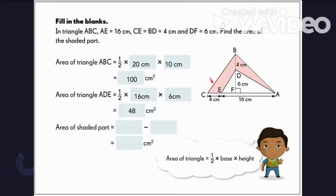Now, since we just need to get the area of the shaded portion, let us subtract the area of the smaller triangle from the area of the bigger triangle. So 100 cm minus 48 cm, this will give us 52 square cm.